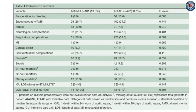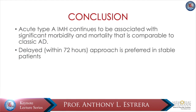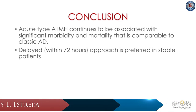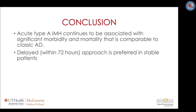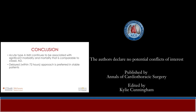This shows outcomes of repair of type A intramural hematoma as compared to classical aortic dissection in our experience. Overall 30-day mortality after aortic repair was 15 percent, without significant difference seen between acute type A intramural hematoma and typical acute type A aortic dissection patients. In conclusion, acute type A intramural hematoma continues to be associated with significant morbidity and mortality comparable to classic aortic dissection, at least in Western cohorts. A delayed approach within 48 to 72 hours is the preferred strategy in stable patients.